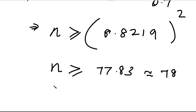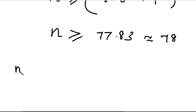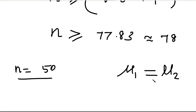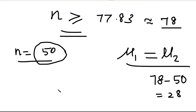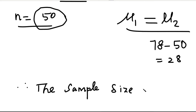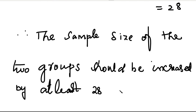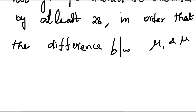Since we already have n = 50 students, and we need n = 78 for significance, the increase required is 78 - 50 = 28. Therefore, the sample size of each of the two groups should be increased by at least 28 in order that the difference between the mean heights of the two groups is significant.